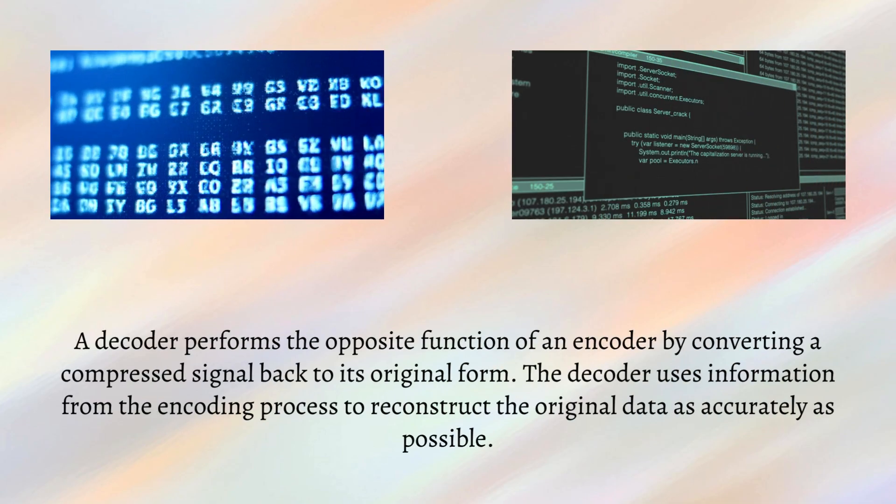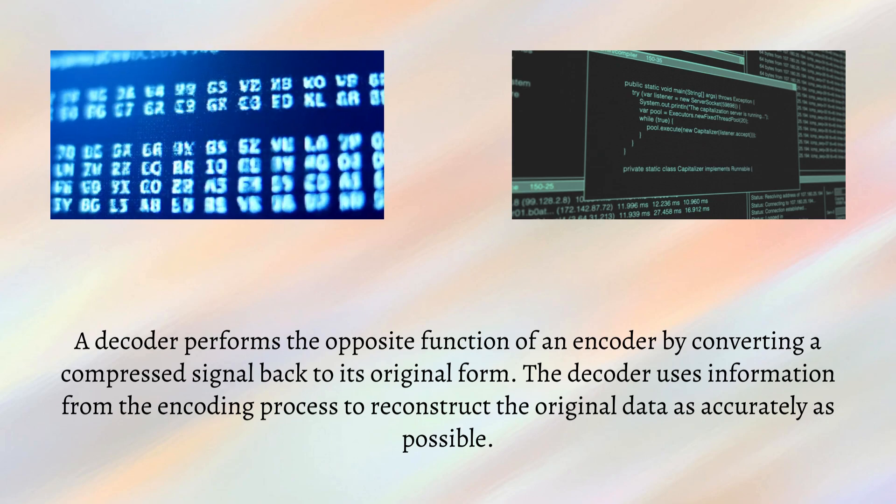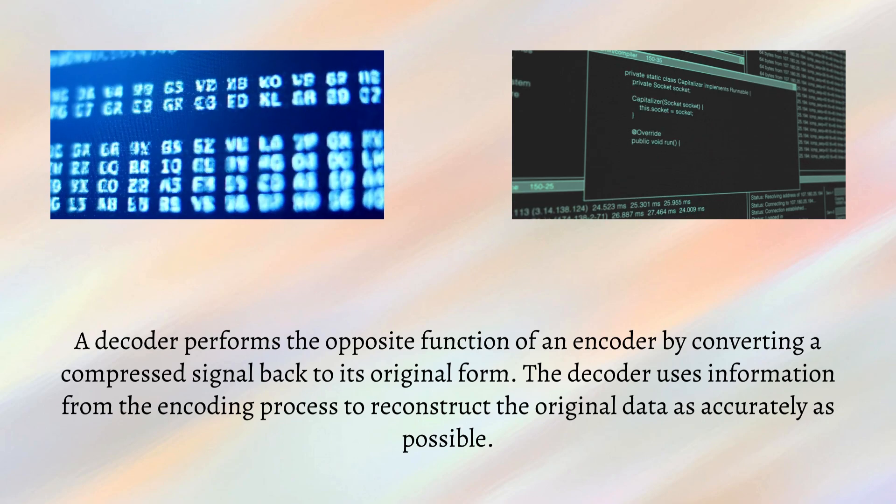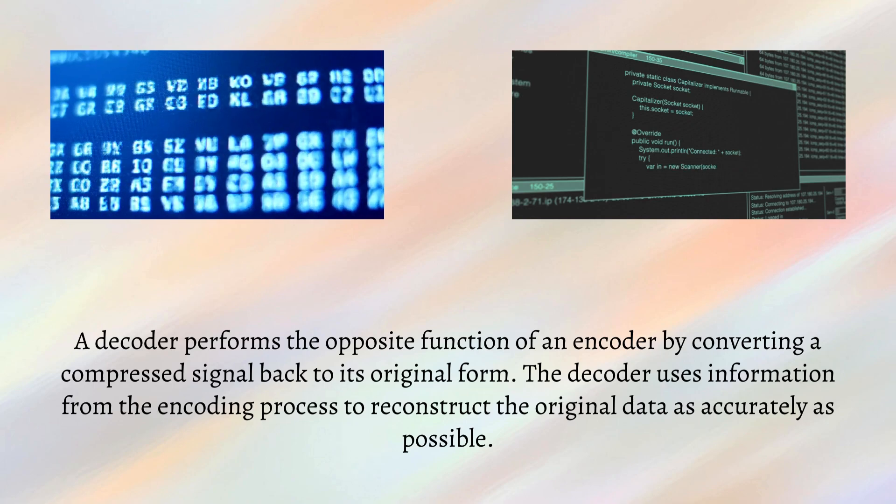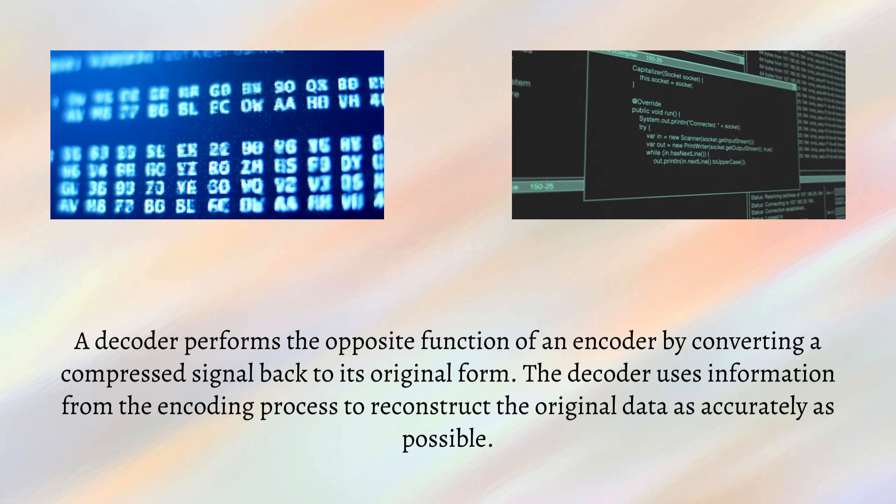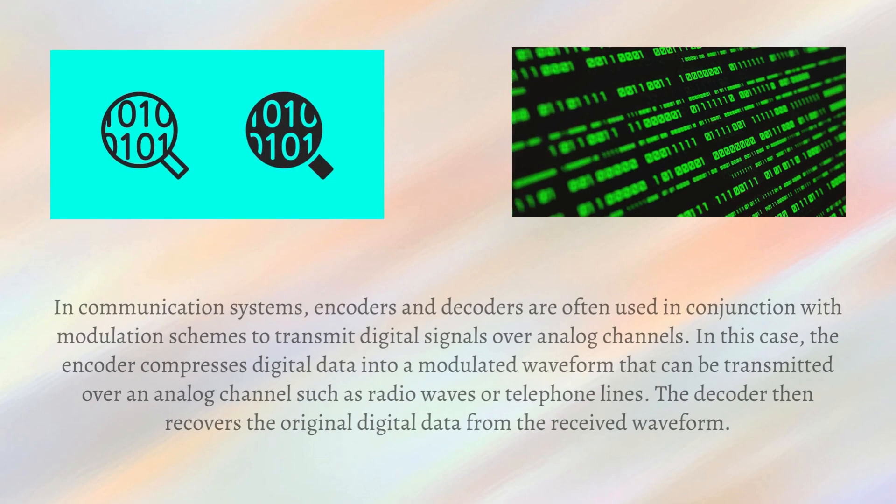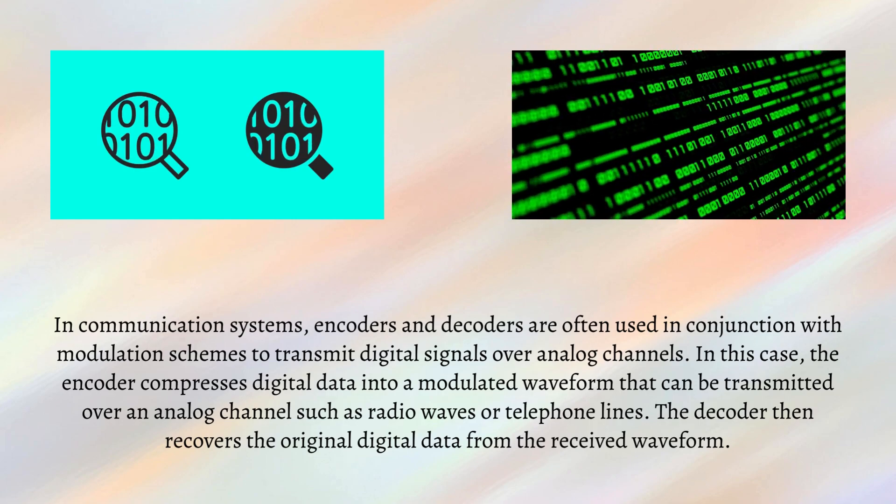A decoder performs the opposite function of an encoder by converting a compressed signal back to its original form. The decoder uses information from the encoding process to reconstruct the original data as accurately as possible.